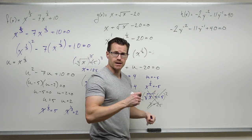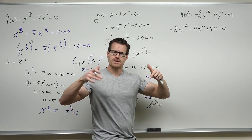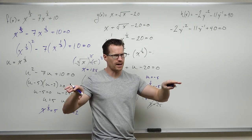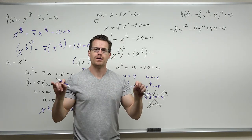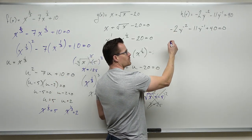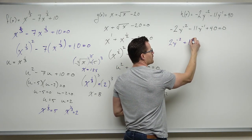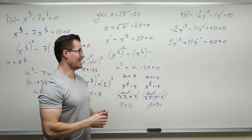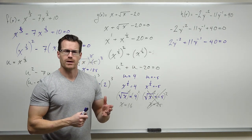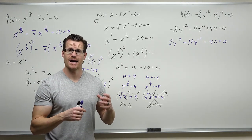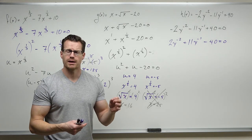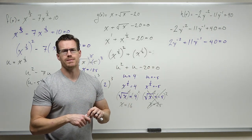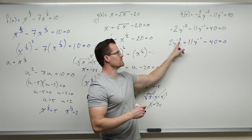After multiplying by negative one and changing signs, can we do a substitution to make this quadratic? Yes — whenever the first power is two times the second power, we can. Negative two is two times negative one, so we can write the first term as (y to the negative one) squared. The common piece in both terms is y to the negative one power — one squared and one to the first power — and we call that u. This gives us 2u squared plus 11u minus 40 equals zero.